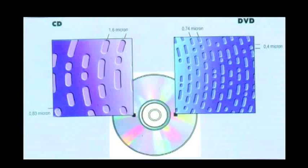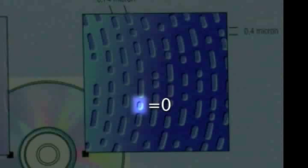A modern compact disc or DVD is a thin sheet of polyethylene — a type of plastic — that has a series of grooves cut in a circular pattern around the disc. Some of the grooves are short; those represent a binary zero. Some of them are long; those represent a one.